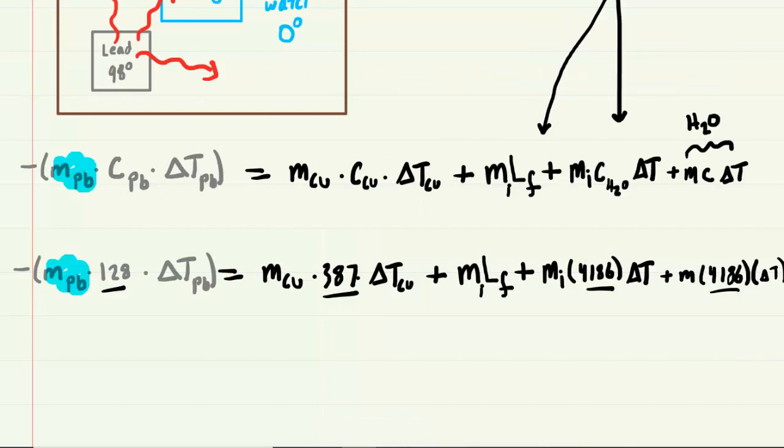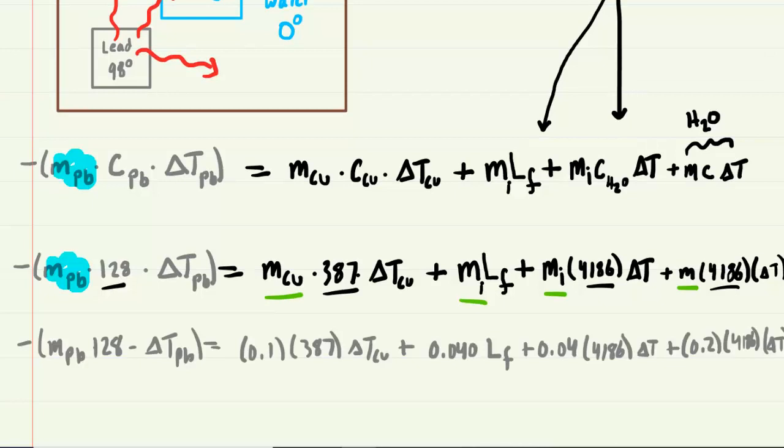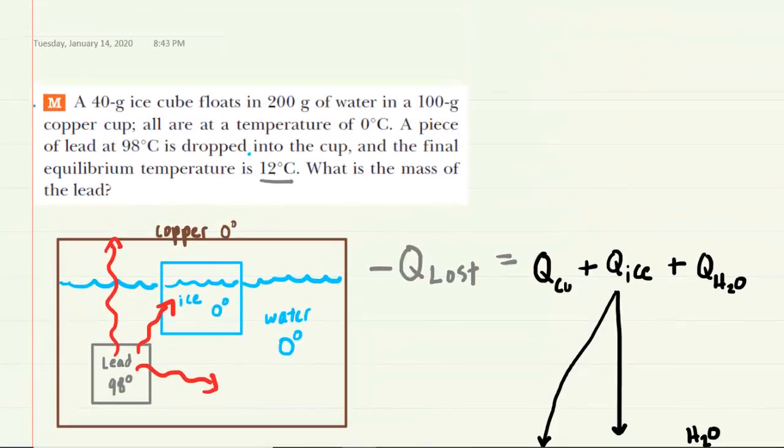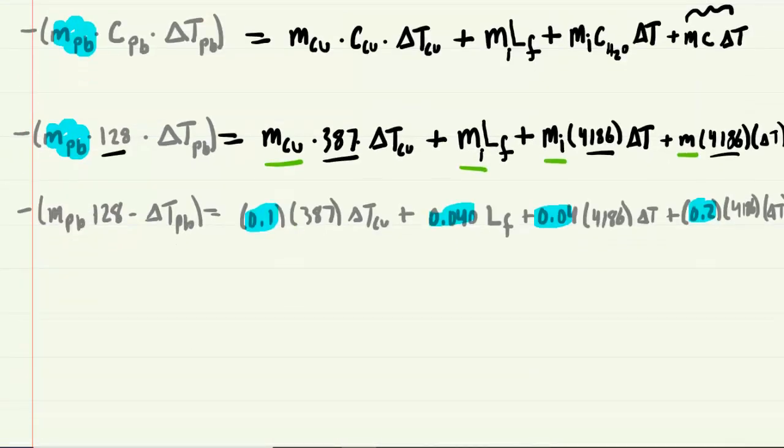So we've plugged in all of those specific heats. Next, it might be helpful to plug in all of the known masses. We know the mass of copper. We have the mass of ice. Notice the mass of ice, that value will be plugged in in the same spot twice. And then we have the mass of the liquid water. So let's plug those values in. Now please do notice that for the masses, which are indicated here, we did have to make sure that we converted them into kilograms. The reason for that is because these specific heat values are in terms of kilograms. So what we did is we took all three of the masses and we divided them by 1,000. So do make sure you convert the grams into kilograms by dividing by 1,000. And you can see that's what we have in those blue highlighted values.